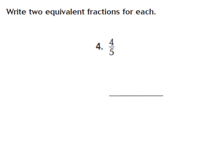Let's look at number 4. We need to find two equivalent fractions for 4 fifths. Remember, we have to multiply the numerator and the denominator by the same number. I'm going to multiply by 2. So 5 times 2 gives me a denominator of 10. And whatever you do to the bottom, you have to do to the top — so 4 times 2 gives me 8. So 4 fifths is equal to 8 tenths.